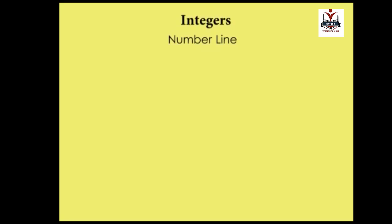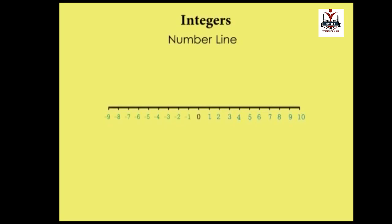All integers can be represented on a number line like this one. From zero, moving towards the right is the positive side, and leftwards is the negative side. We use number lines to add and subtract integers.